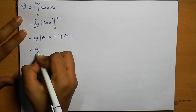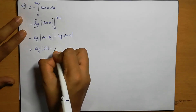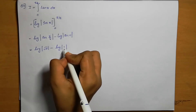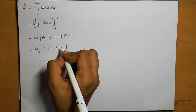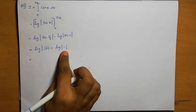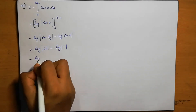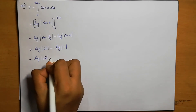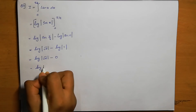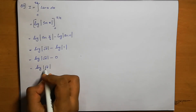Log secant pi by 4 is root 2. So log mod root 2 minus log secant 0 which is 1, meaning log 1. Log 1 equals 0. So the answer is log root 2 minus 0, which is log root 2.